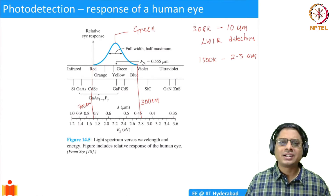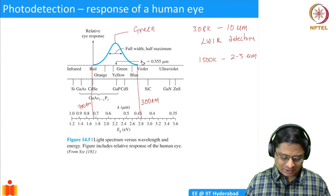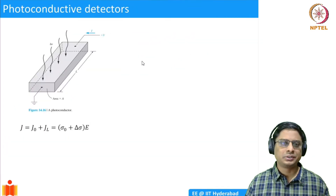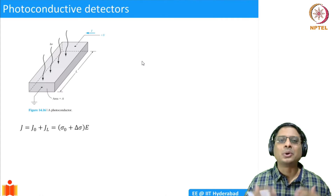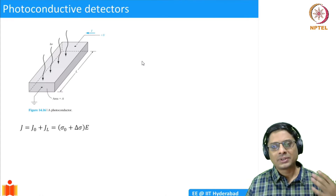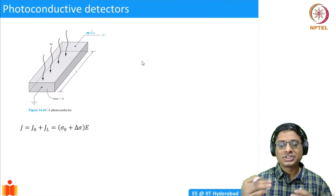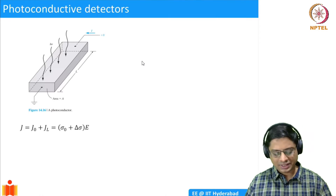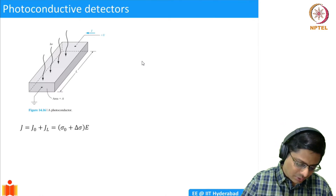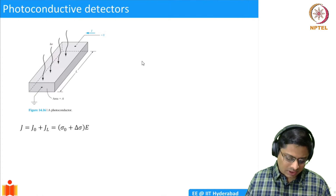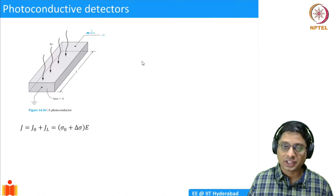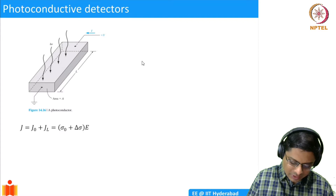Today we would like to understand the basic principles of photodetectors. Let us look at one of the simplest: a photoconductive detector. What it does — you take a piece of silicon, or any semiconductor, and you shine light on it. The light produces electron-hole pairs, a story we have covered many times in this course. You can then detect the change in conductivity of that piece of silicon.